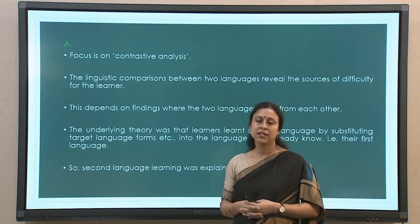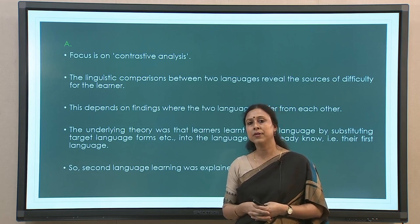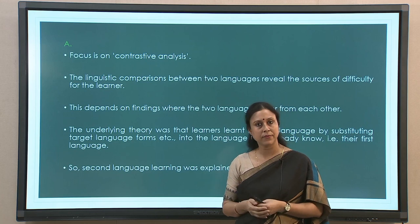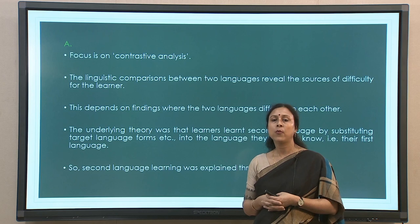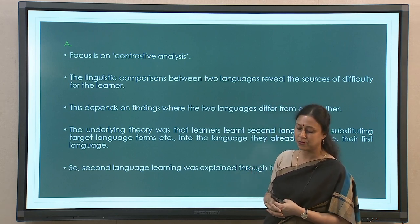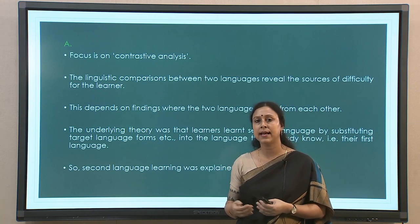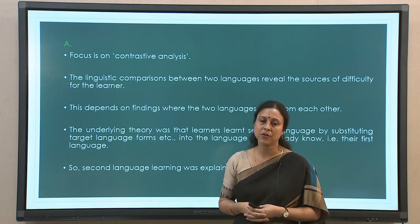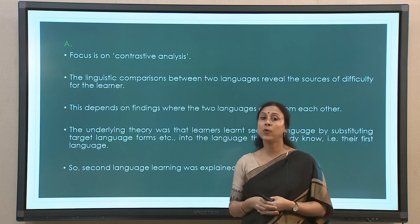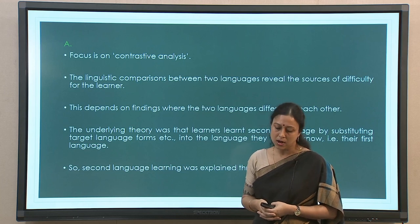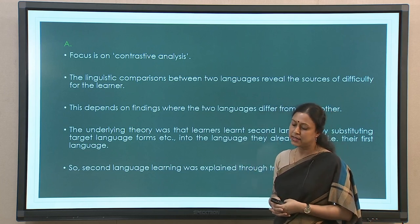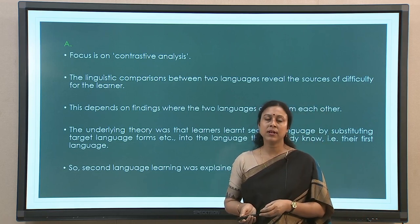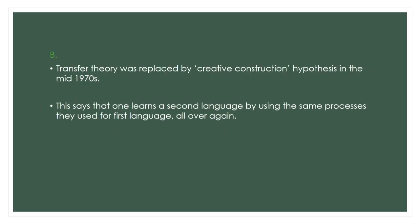In the case of contrastive analysis, the idea was to look at how the two languages of a bilingual are different — the contrast between the systems of the two languages. The linguistic comparison between languages was taken as an important indicator of the source of difficulty. For example, if my L1 has no grammatical gender and my L2 does, comparing and contrasting these two linguistic systems will tell us that the speaker will find difficulty in acquiring grammatical gender in the second language. The underlying theory was that learners learn a second language by substituting target language forms into the language they already know — second language was thought to be learned through a transfer of ideas from the first language.